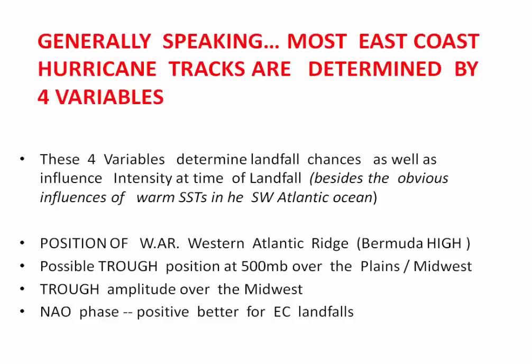Generally speaking, most East Coast hurricane tracks are determined by four variables. This is why forecasters making seasonal forecasts for landfall projections are largely unreliable — because these variables determine whether a hurricane makes landfall in the Gulf of Mexico or the East Coast, and we don't know what these variables will be in January, April, or May. The first variable is the position of the Western Atlantic Ridge, known as the Bermuda High. This past season, we saw with Florence and Michael that the Bermuda High was very far to the west, which is why we had such a warm September and why these hurricanes were forced inland.